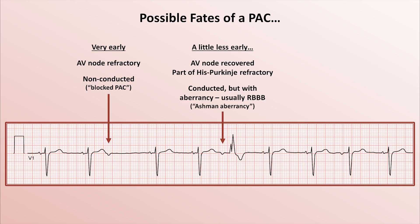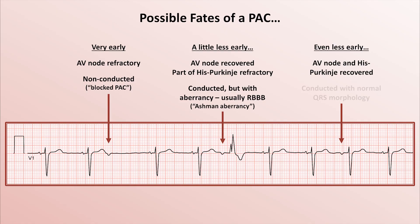And last, if the PAC occurs even less early, nothing is refractory, and the P-wave is conducted down both bundle branches, resulting in a QRS complex that is early but otherwise of normal morphology.